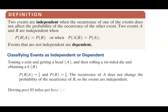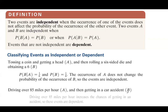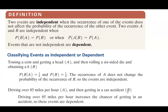Another example: driving over 85 miles per hour is event A, and getting in a car accident is event B. As you might guess, driving over 85 miles per hour increases the probability of getting in a car accident. So these two events are dependent.